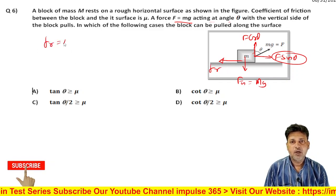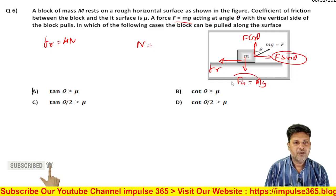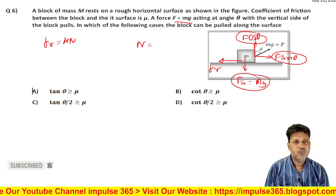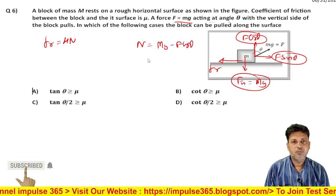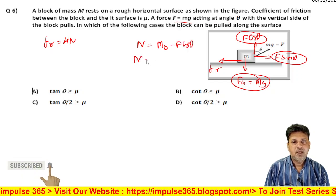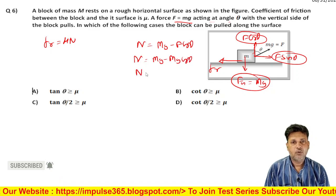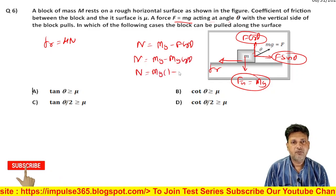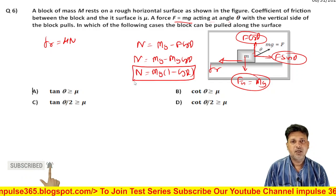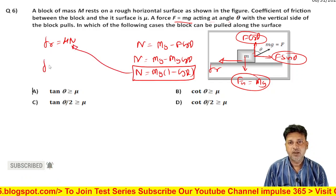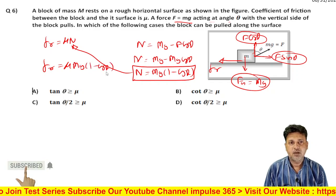The friction force is equal to mu into N. To calculate N, we look at the vertical direction: Mg and F cos theta. So the normal reaction N is equal to mg minus F cos theta. Therefore friction force equals mu times (mg minus F cos theta).